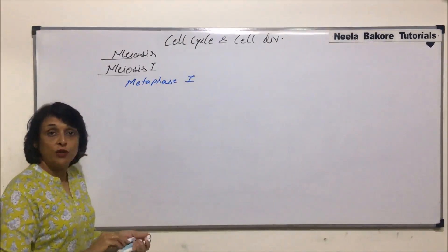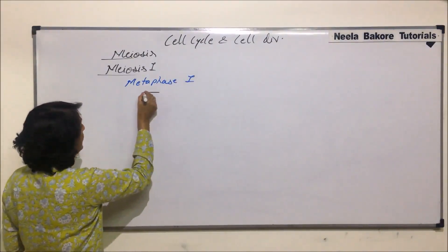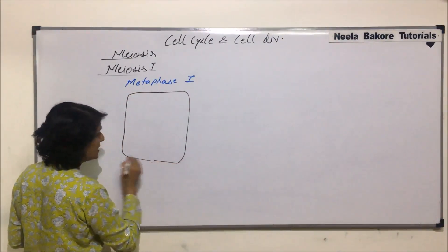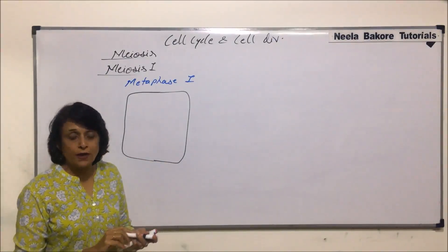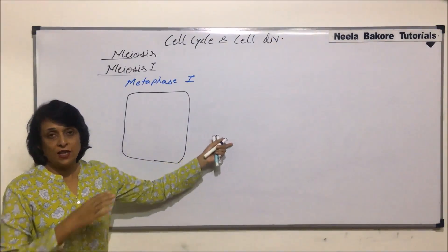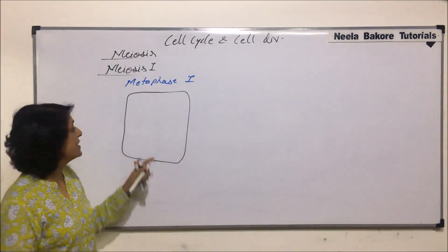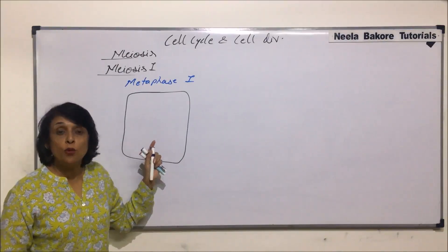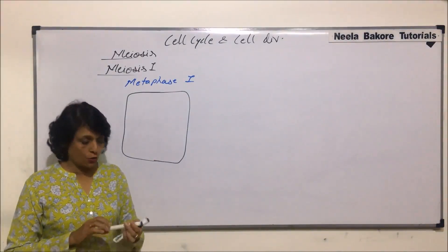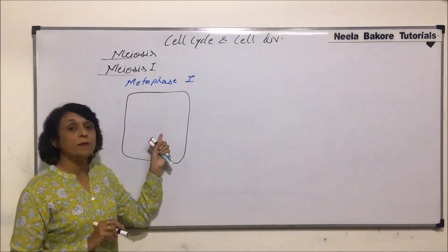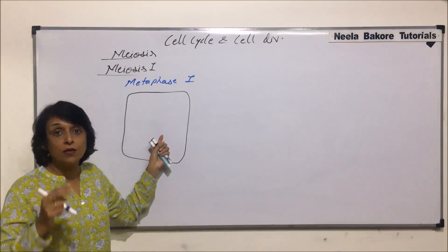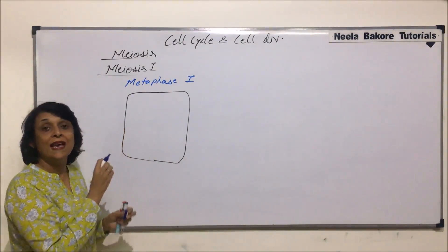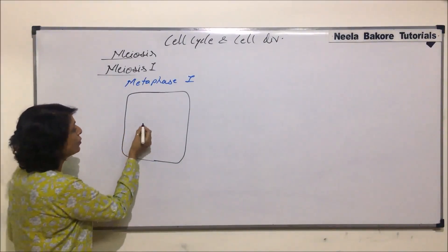What changes take place in a cell undergoing metaphase 1? The nuclear membrane has already disappeared by the end of prophase 1 — that was at the last stage, diakinesis. Now the spindle fibers are already formed, and the chromosomes get aligned on the equatorial plane. But here, the chromosomes which come are in homologous pairs — so homologous pairs of chromosomes get aligned on the equatorial plane.